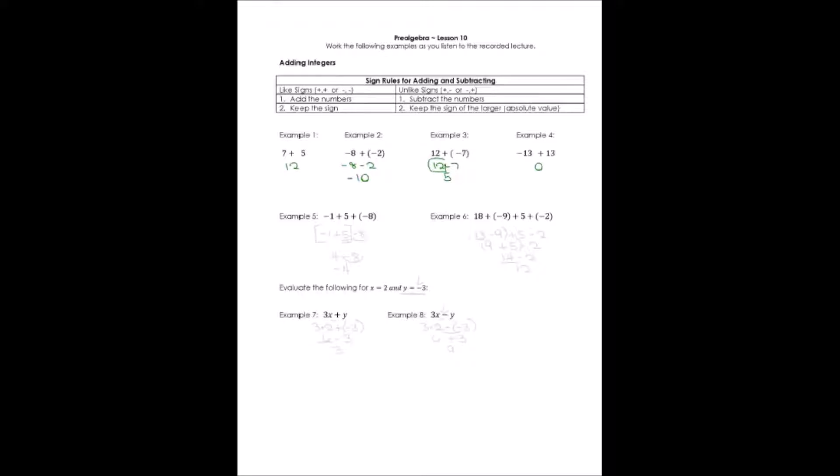All right, let's take an example of number 5 and see what happens with three numbers. Now, I'm going to rewrite this one just because you can look at it two different ways. Negative 1 plus 5 plus a negative number could be written negative 1 plus 5 minus 8. And I'm going to look at it both ways. If I said I'm going to work at two numbers at a time, I'm going to say negative 1 plus 5. Negative 1 plus 5, opposite signs. I'm going to subtract the numbers. I'm going to say 5 minus 1. That would give me a 4.